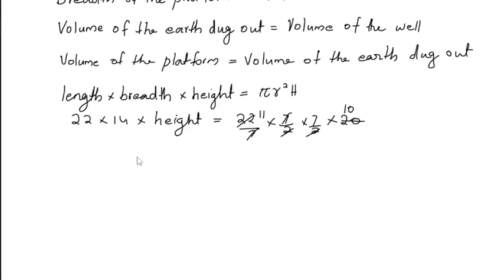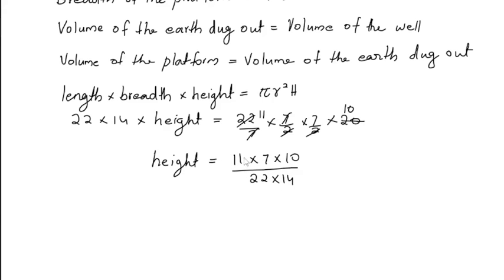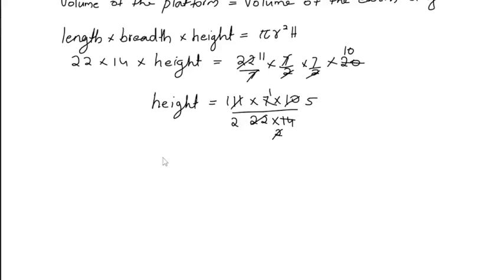To get the height of the platform, transpose 22 into 14 to the right hand side: 11 into 7 into 10 divided by 22 into 14. Cancel 11 by 22 to get 1 by 2, and 7 by 14 to get 1 by 2. Then 2 into 10 gives 5. We get the height as 5 by 2 meter, which is equal to 2.5 meter. So the height of the platform is 2.5 meter.